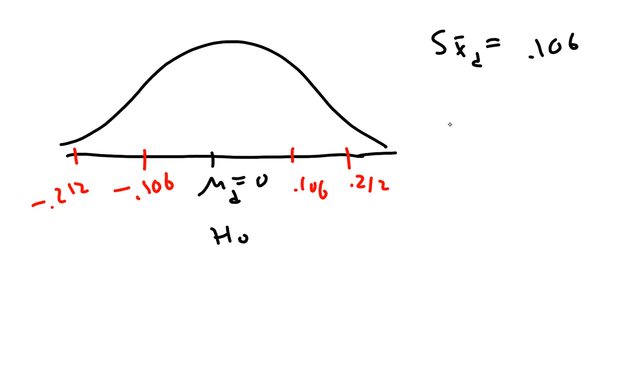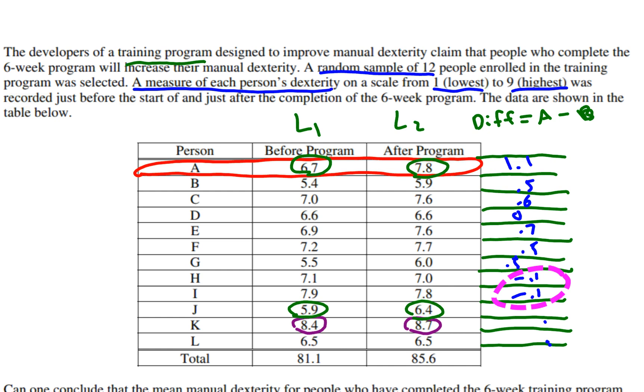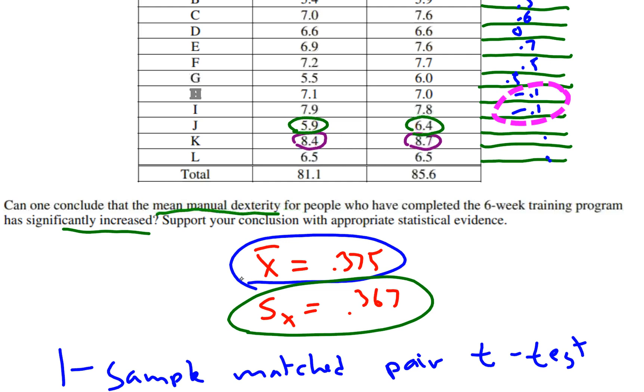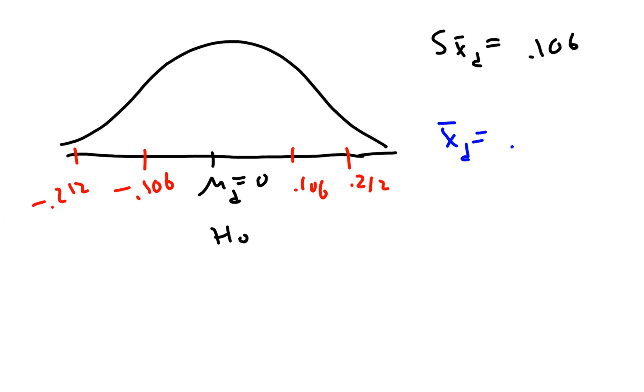Then finally we're ready to mark off our X̄_d. Our average difference in the after test score minus the before test score is 0.375. So 0.375 goes on here. You'll notice that's really far out. It's out over here somewhere at 0.375. So we have a very, very small p-value, it looks like.